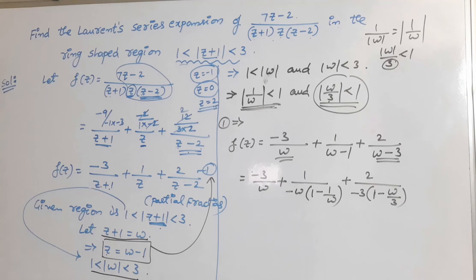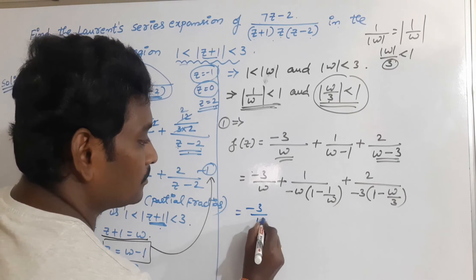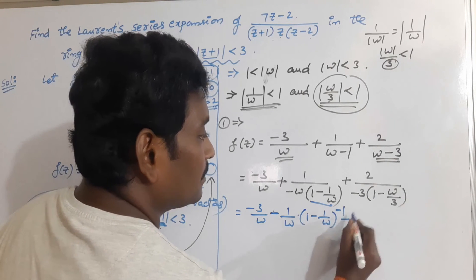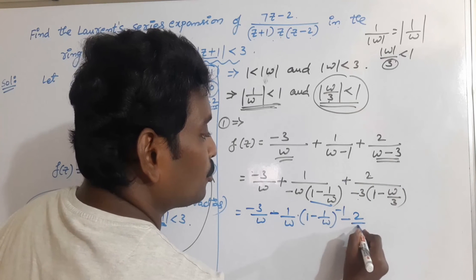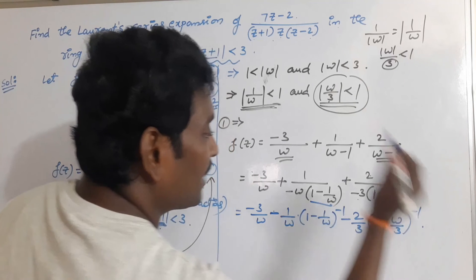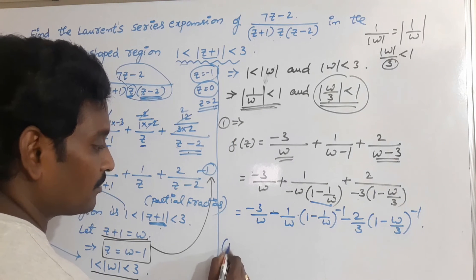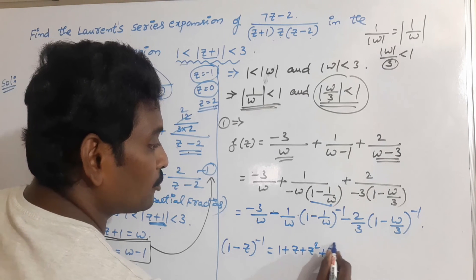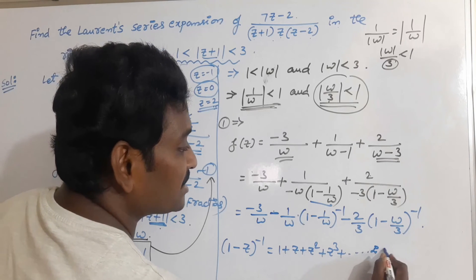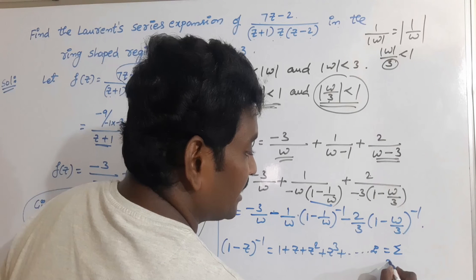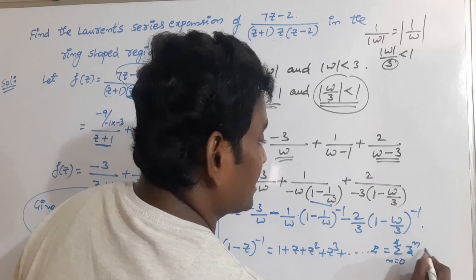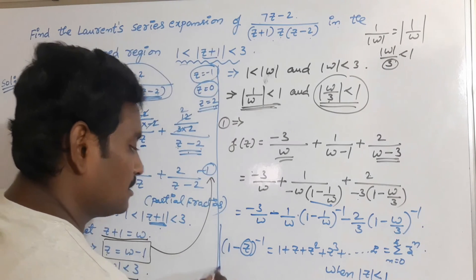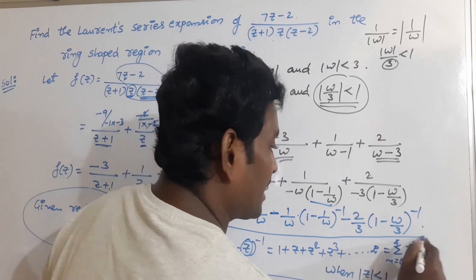This becomes: -3/w - (1/w) · (1 - 1/w)^(-1) - (2/3) · (1 - w/3)^(-1). We know the expansion of (1 - z)^(-1) = 1 + z + z² + z³ + ... = Σ(n=0 to ∞) z^n, valid when |z| < 1. We have |1/w| < 1 for the first series and |w/3| < 1 for the second, so we can apply this formula to both terms.